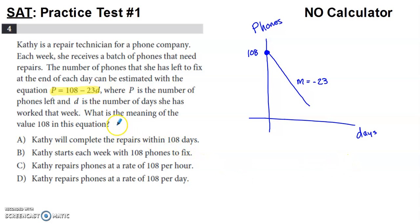So the question really is, what is the meaning of 108? So we have this graph starting at 108. So that's at day zero, right? No days have gone by at this point on the graph. And if no days have gone by at that point on the graph, and we go and we look at these options...